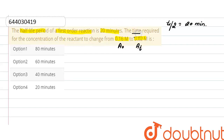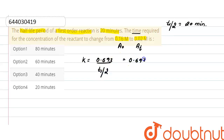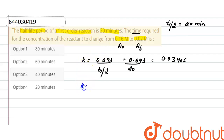First, we find the rate constant from the half-life data. The rate constant k equals 0.693 divided by t-half. So k equals 0.693 divided by 20, giving a value of 0.03465.